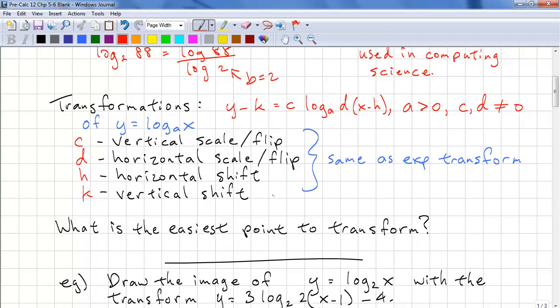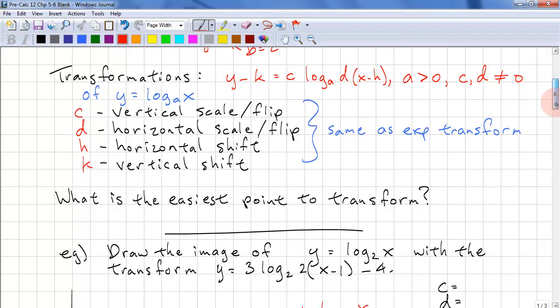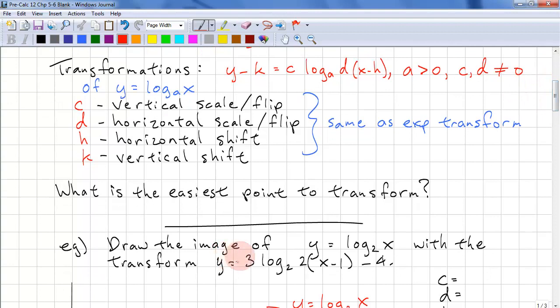If we look at logarithm, what is the easiest point to transform? That's log_a(1), and that's 0. So our point that we're transforming is (1, 0).